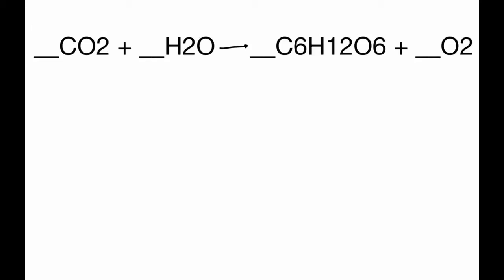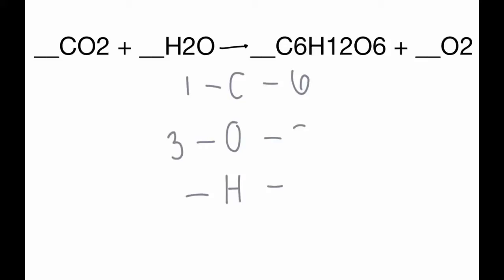For this last example, we set it up the same way with C, O, and H. On the left side we have 1 C, and on the right side we have 6. On the left side we have 3 O's and on the right side we have 8. On the left side we have 2 H's and on the right side we have 12.